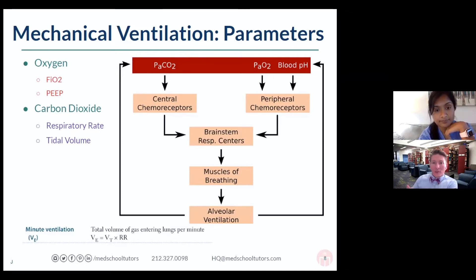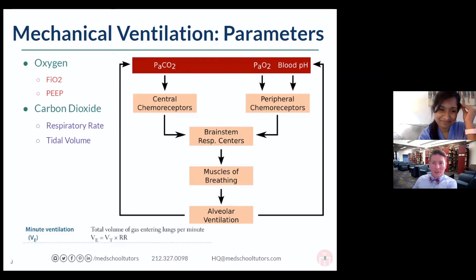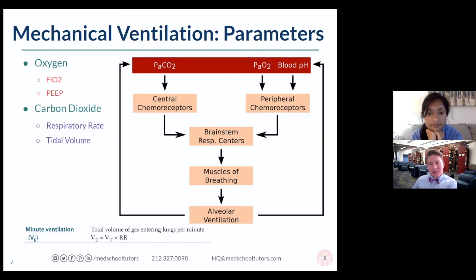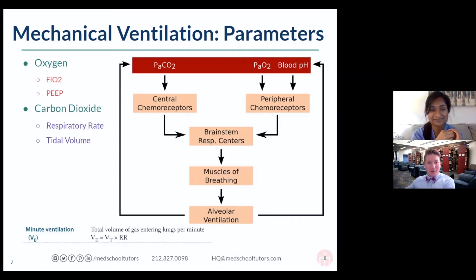That comes to: how do we intervene? For oxygen, the first answer is super easy — just give them more oxygen. So the fraction of inspired oxygen, FiO2, is a straightforward answer: just give them some more of that, and that should improve their oxygenation in the vast majority of cases. The other way we can fix oxygen is called PEEP, or positive end-expiratory pressure — we'll come back to defining what that means in a moment.